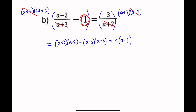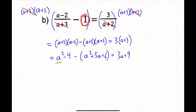Now expand. This gives us a squared minus 4, and then minus a squared plus 5a plus 6, equals 3a plus 9. The a squared and minus a squared cancel, so we have minus 4 minus 5a minus 6 equals 3a plus 9.